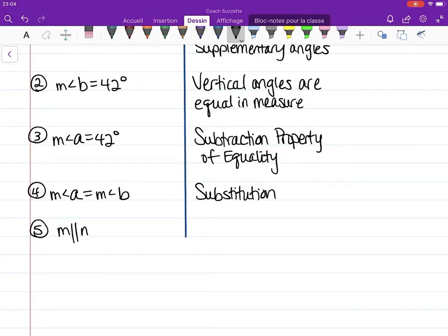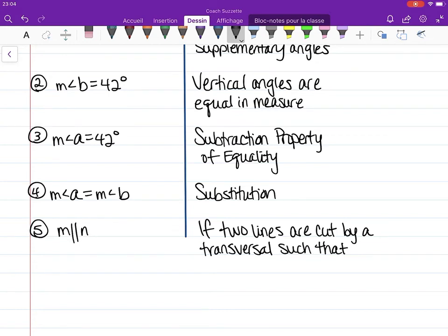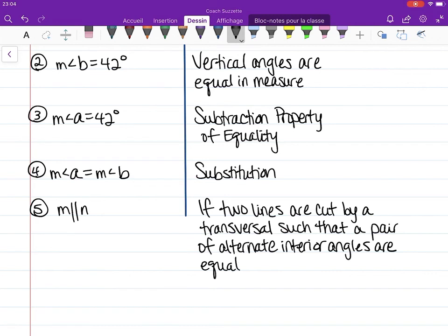Therefore, m must be parallel to n because—we have to write all this out—if two lines are cut by a transversal such that the pair of alternate interior angles are equal in measure, then the lines are parallel.